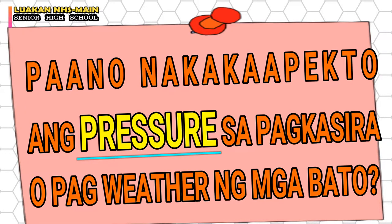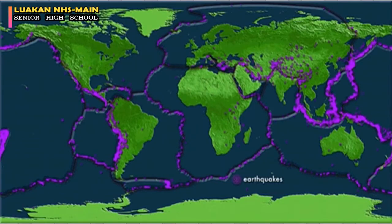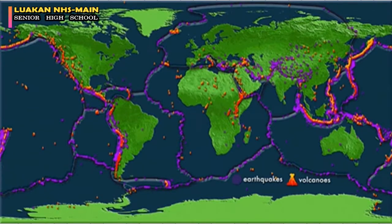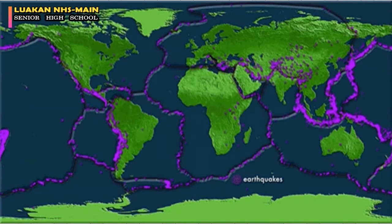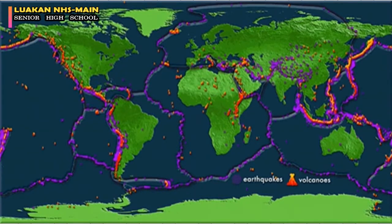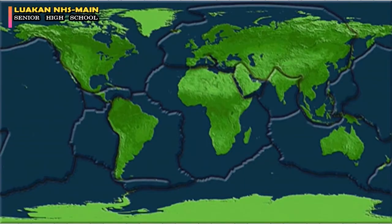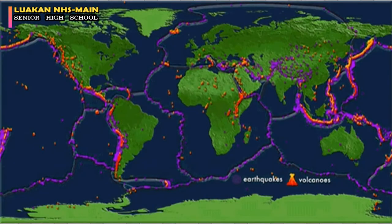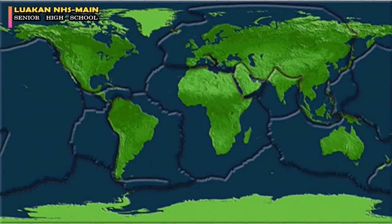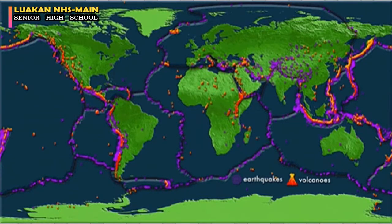How does pressure affect the weathering or destruction of rocks? We can place this in the context of a geologically active world — meaning the tectonic plates, and even what's beneath them, are continuously moving as we speak. The tectonic plates are bumping or colliding with each other, and this collision produces so much pressure. This pressure is enough to cause the rocks to crack or break.